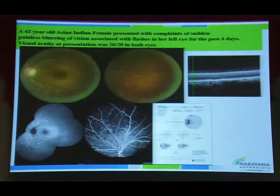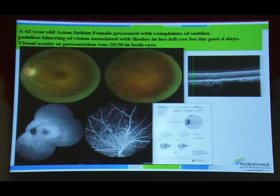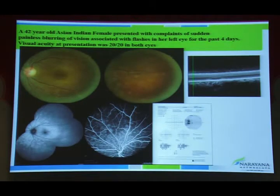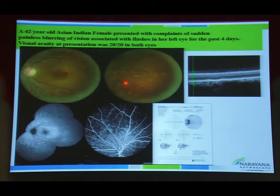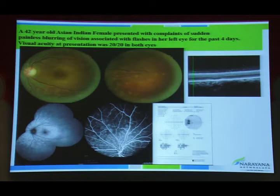Visual fields are indicated especially in suspected white dot syndrome. In a case of unilateral vision decrease with visual acuity of 6/6 and multiple hypopigmented lesions in the mid-periphery with foveal granularity, in addition to FFA and OCT findings, visual field showed enlargement of the blind spot in a case of multiple evanescent white dot syndrome.